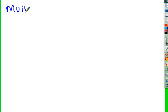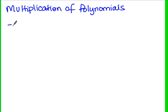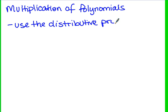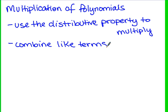When we multiply polynomials, there are two things we need to remember. First, we use the distributive property to multiply. And once each term has been multiplied, we combine like terms. Keep in mind that a like term is a term in which the variable parts are identical. Coefficients don't have to be the same, but the variable part needs to be identical.